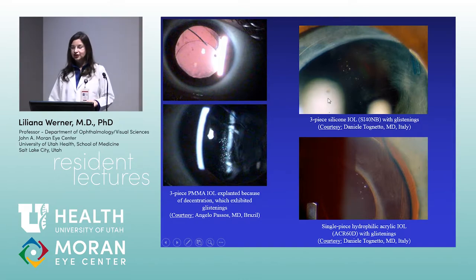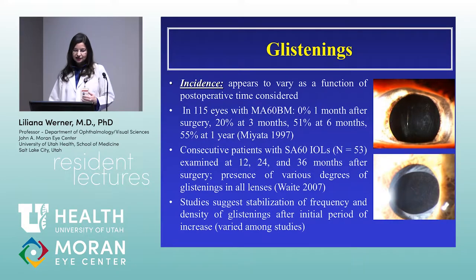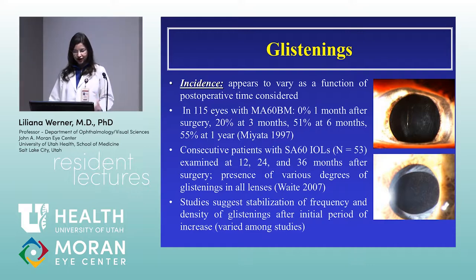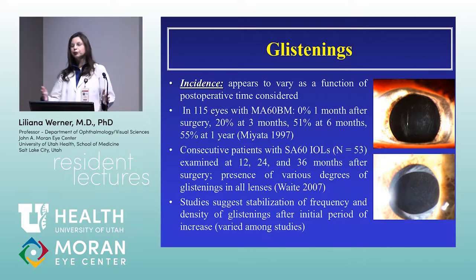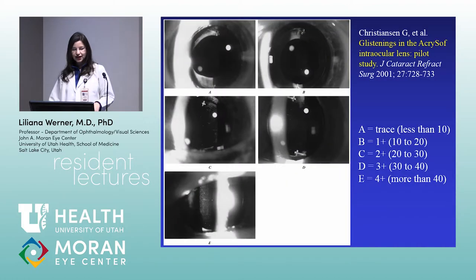Glistenings may occur with other materials but are usually not a significant issue with them. Some studies suggest that after a period of two to three years of initial growth, the frequency, size, and density of glistenings stabilize. There are various classification systems in the literature for grading glistenings at the slit lamp, or using slit lamp images on a computer to calculate the number of glistenings per volume of lens.